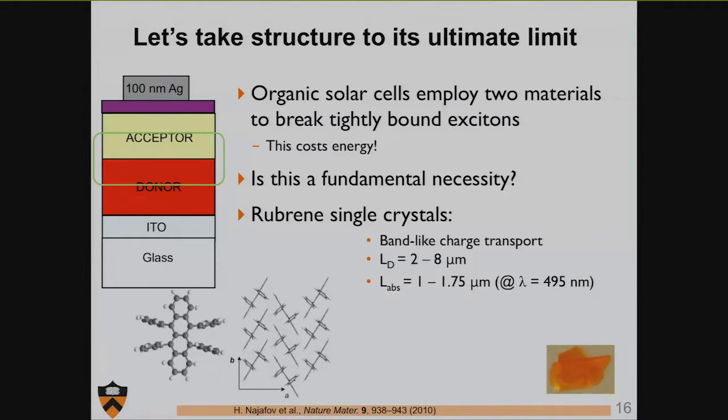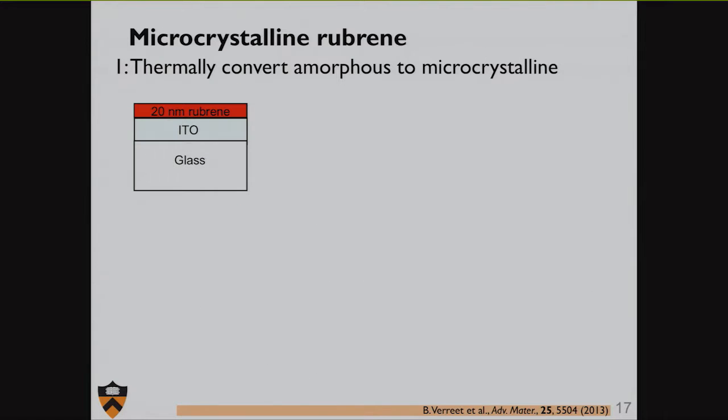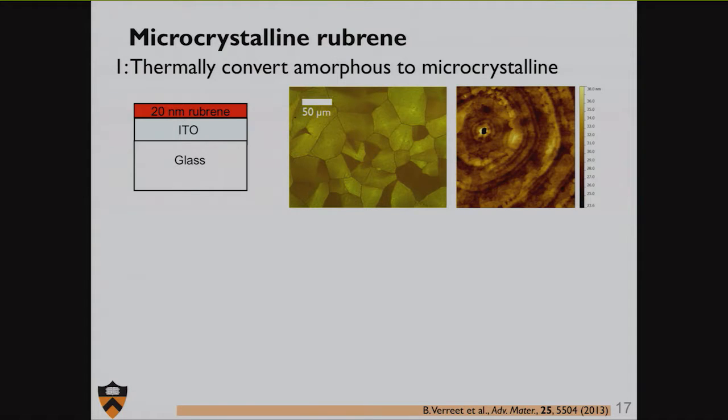We have this donor-acceptor interface, the donor that donates an electron, the acceptor that accepts an electron. This provides the energy to split that exciton into a free electron and hole. The problem is this costs energy. The question we're asking is, is there a way around that? We try to design materials that can perhaps overcome this energy loss mechanism. So we looked at rubrene because it's known to have interesting characteristics. Band-like charge transport, and the exciton can move very long distances, two to eight microns, numbers that are unheard of in organic semiconductor lingo. The problem is these measurements were done on bulk crystals like this, not on thin films. How do we make thin films with this level of grain size?